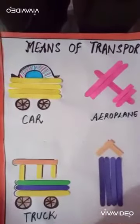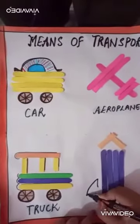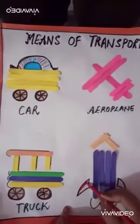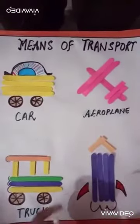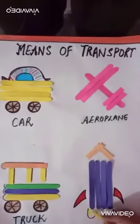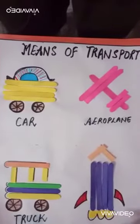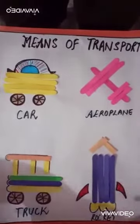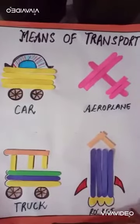We will draw the wings of the rocket like this and color the fire yellow. Now the rocket is ready. So this is our rocket. We have made a car, airplane, truck and a rocket. Thank you.